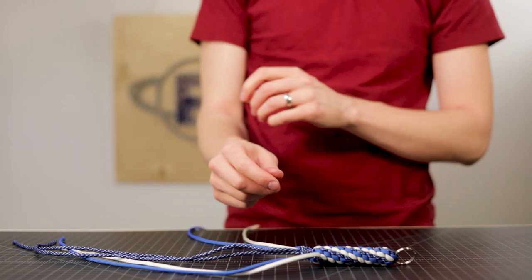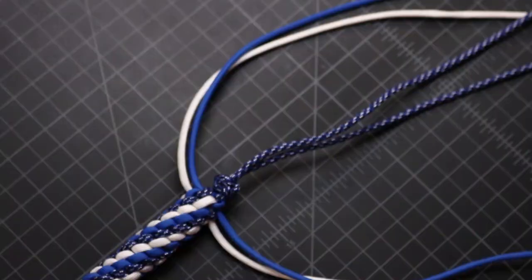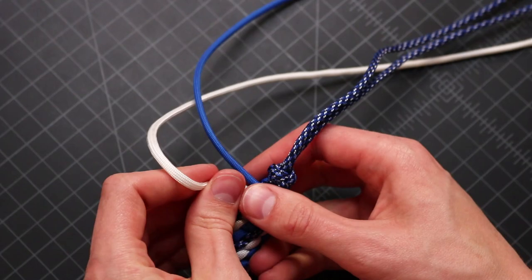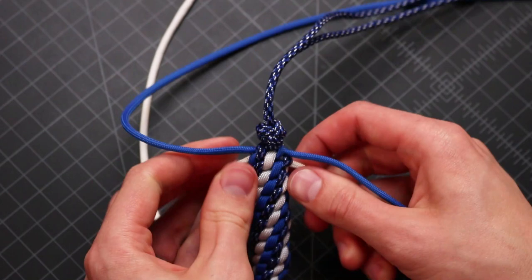All right so there we go. That's tightened down. And now we're just going to go ahead and pull all of our cords tight no matter where they are. Just to get all those knots tightened down before we clip them. I'm going to do these white ones first.